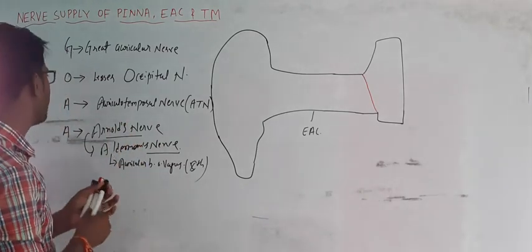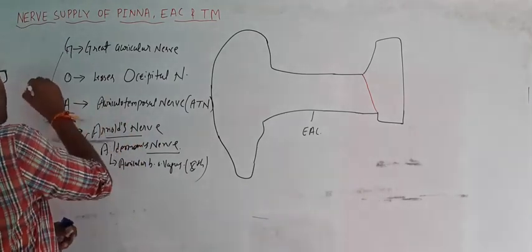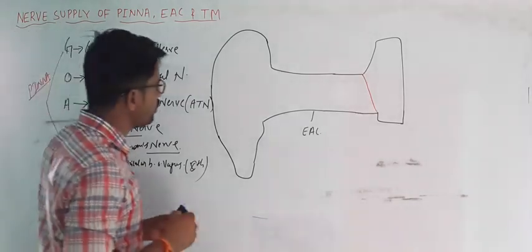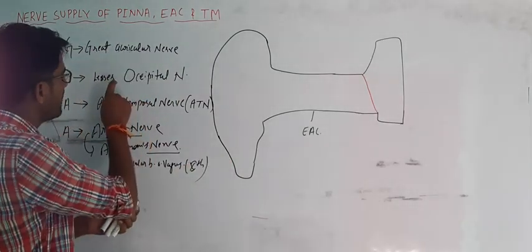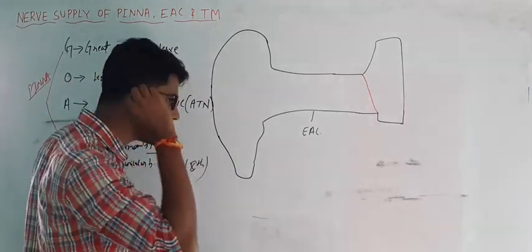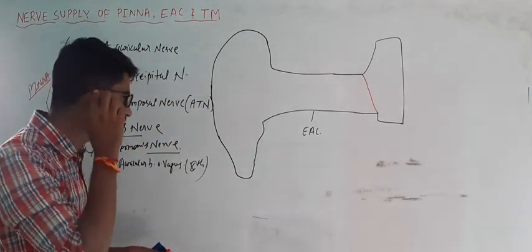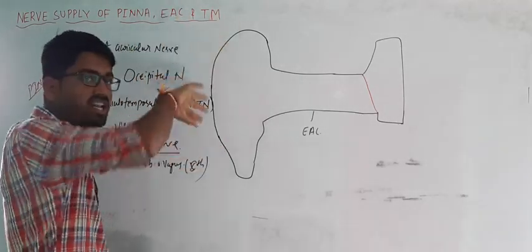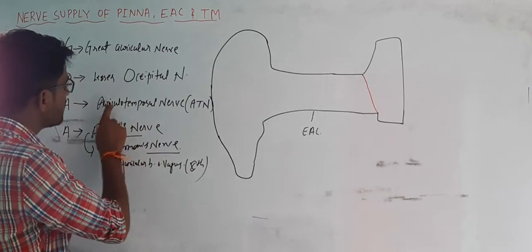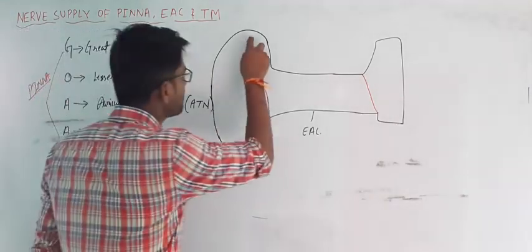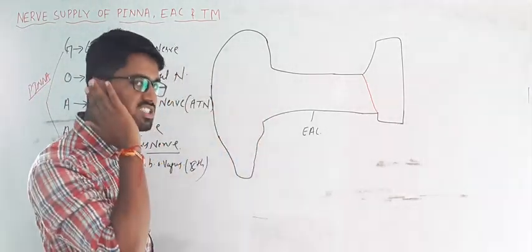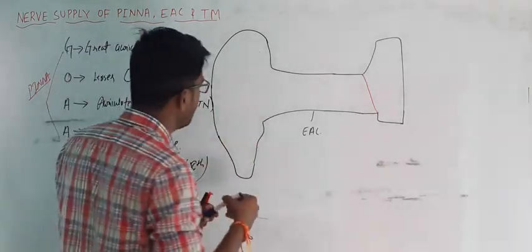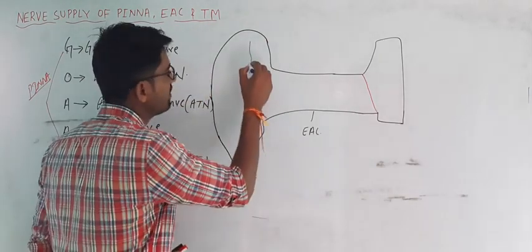This is the nerve supply of the pinna. The Greater Auricular nerve and Lesser Occipital nerve — occipital is this region, so it's supplying the medial surface, upper two-thirds. The Auriculotemporal nerve is supplying the upper two-thirds of the lateral surface. The Great Auricular nerve is supplying the lower one-third on both sides.